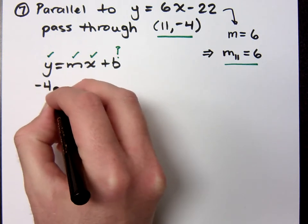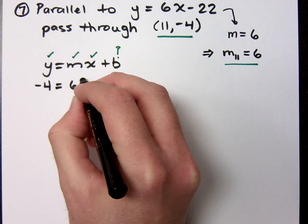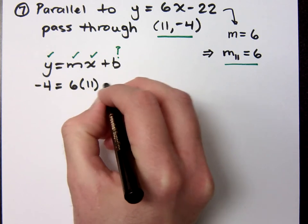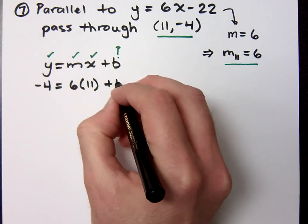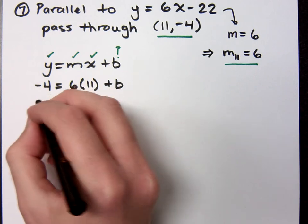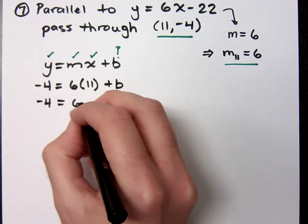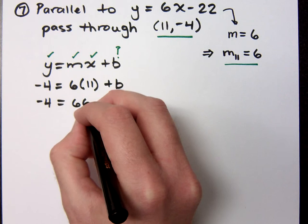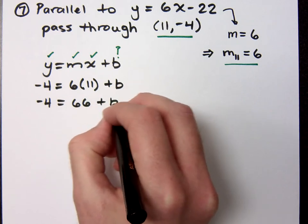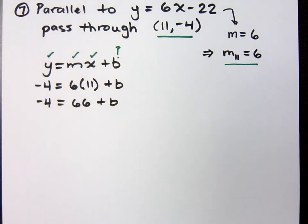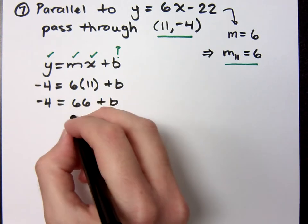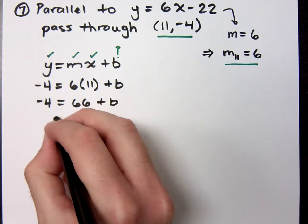Negative 4 equals 6 times 11 plus b. All right. Negative 4 equals 6 times 11 plus b. So, when we work this out, negative 4 equals 66 plus b. Please make sure that you can tell the difference between your 6's and your b's. So, when I get b by itself, what do I have?